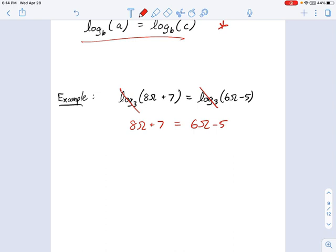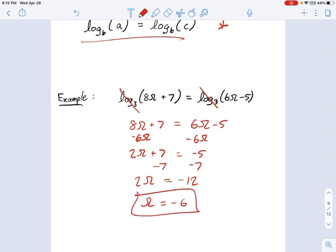And now we just solve for the variable like we would before. I'm going to do minus 6 omega from each side. And that gives me 2 omega plus 7 on the left and negative 5 on the right. So we'll subtract 7 from both sides. And we get 2 omega equals negative 12, divided by 2. And you get omega equals negative 6.